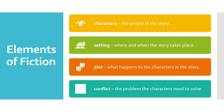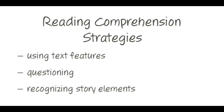As we read today, we're going to pay close attention to the different elements of fiction. Characters — the people in the story. Where and when the story takes place. Plot — what happens to the characters in the story. And conflict — the problem the characters need to solve. The reason we need to pay close attention to these elements is because it's a great reading comprehension strategy. By understanding all the different elements of fiction, understanding the overall story becomes much, much easier.